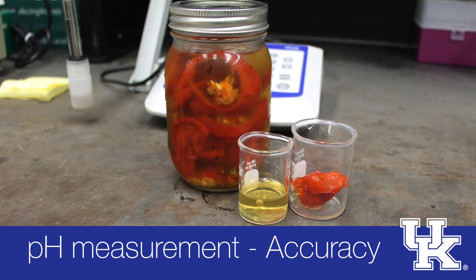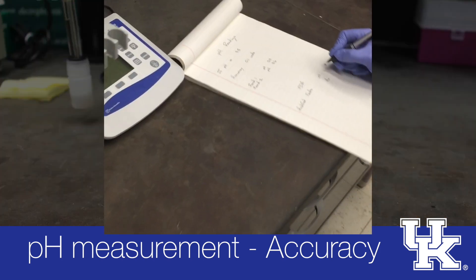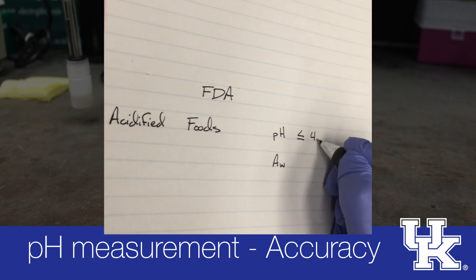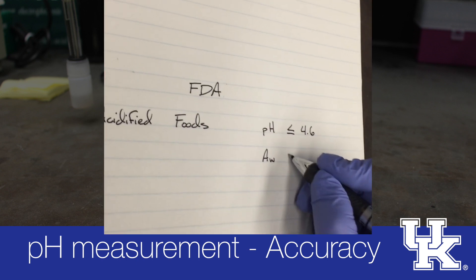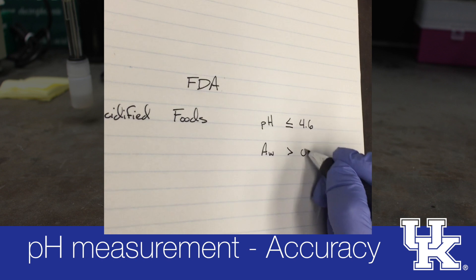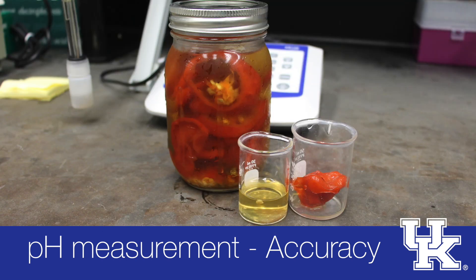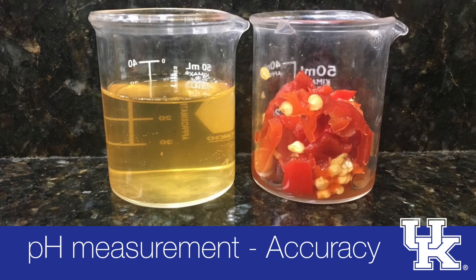For example, the FDA defines an acidified food as one with a pH less than or equal to 4.6 and water activity greater than 0.85. In such a case, having a testing tool with an accuracy of 0.1 units becomes very critical if, for example, your product pH is normally between 4.5 and 4.7.